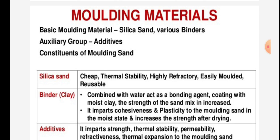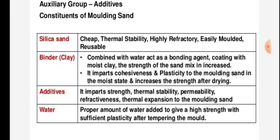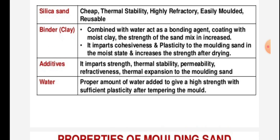Silica sand is cheap, has thermal stability, is highly refractory, easily molded, and reusable. Binder clay, combined with water, acts as a bonding agent. With coating of moist clay, the strength of the sand mix increases.